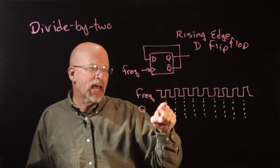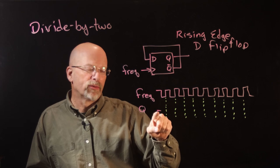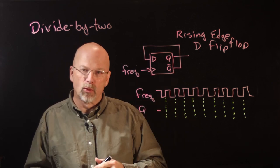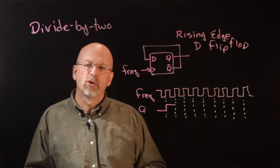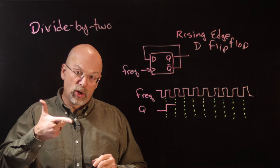So what happens at one of these rising edges? Well, if Q is a zero, that means D contains a one, and when we get this rising edge, we're going to change Q to a one, and it's going to flip it. It's going to invert it.